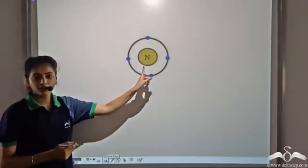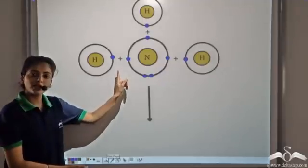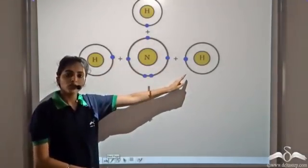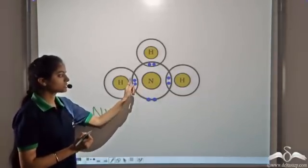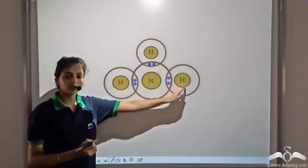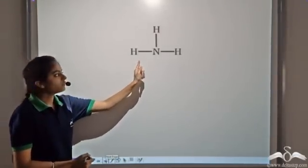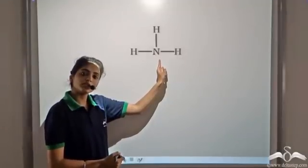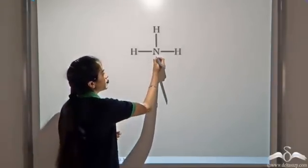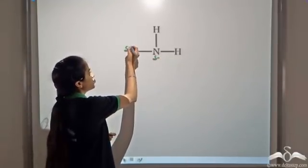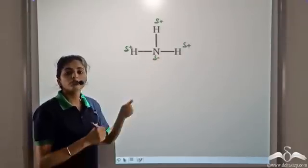Let's take another example. We have a nitrogen atom which has five valence electrons, so it needs three more electrons. This is done by sharing one electron with each of the hydrogen atoms. So now it forms ammonia, that is NH3. Nitrogen in this case has eight electrons and each hydrogen atom has a duplet structure. Nitrogen has a higher electronegativity than hydrogen, so nitrogen tends to attract the shared pair of electrons more towards itself. So it gets a slightly negative charge and the three hydrogen atoms get a slight positive charge. So ammonia is a polar covalent compound.